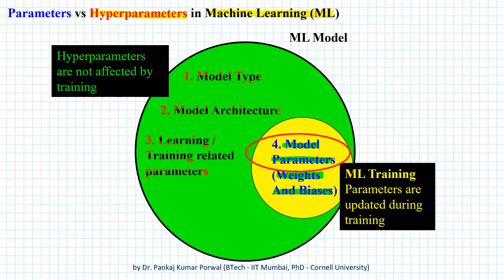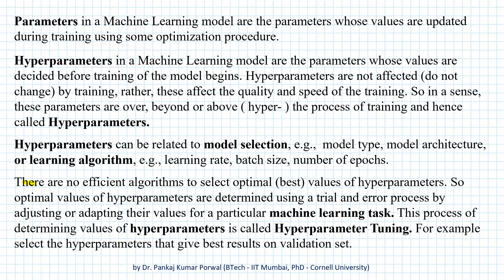So the best values of parameters are determined using the training process. But then, how do we determine the best values of hyperparameters? As it turns out, there is no efficient algorithm to select optimal or best values of hyperparameters.